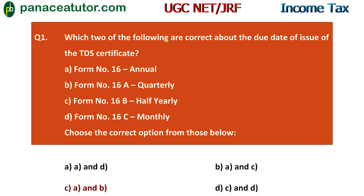The correct answer is A and B. Form 16 is issued annually and Form 16A is issued quarterly. Forms 16B and 16C are issued per every transaction — but the options presented those incorrectly, so A and B are correct, making the answer option C.